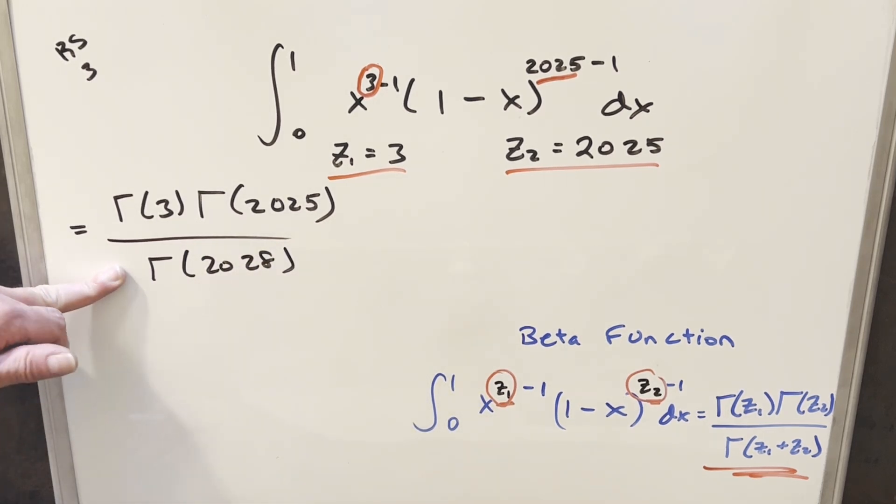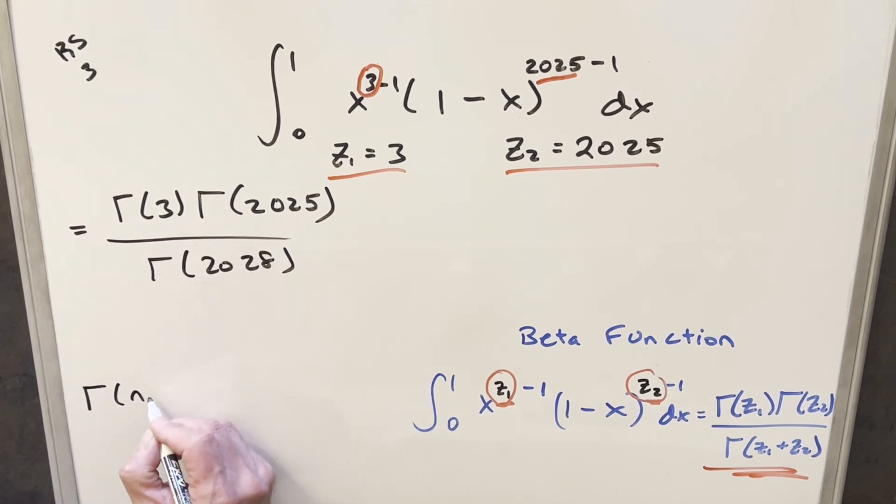And then from here, in order to just evaluate the gamma function and get this in terms of some kind of number, we have this formula to get the gamma function in terms of the factorial. We can use gamma of n plus one. When n is an integer, this is going to be the same thing as n factorial.